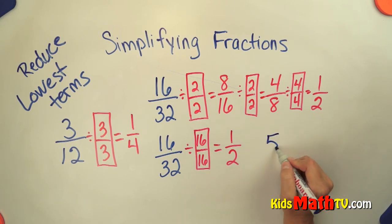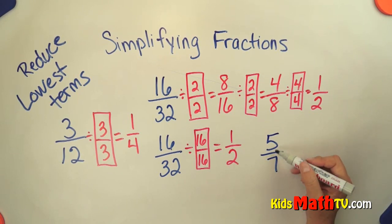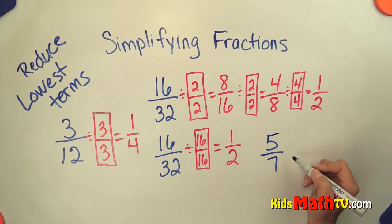You may find numbers such as 5 7ths. 5 7ths, I check, is there a number that will divide both 5 and 7 evenly? They're both prime numbers so nothing else will divide them. This is actually already in simplest terms so you don't have to reduce that anymore.